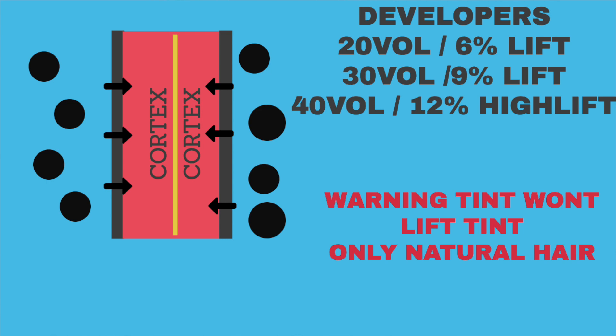Even when you're depositing color or covering white hair using 10 vol or 3 percent, there is still a small amount of lift involved. The developer and the color will lift out some of the natural pigmentation and deposit the artificial color. This then oxidizes, swells up inside the hair and forms links, making the hair color permanent. It's ideal for covering gray hair or if your client is absolutely adamant that that's the color they want.